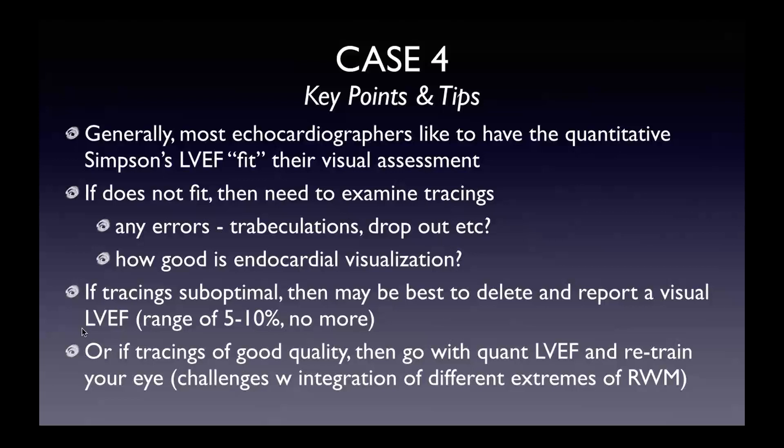Generally when we do Simpson's biplane, we would like to see that LV EF fit the visual assessment. If the number doesn't fit what you think when looking at all the images, you have to examine the tracings — are there any errors? Did you trace trabeculations? Is there dropout? Are you not seeing the endocardium as well as you thought? If the tracings are suboptimal and you didn't use contrast — or if you used contrast and tracings are still suboptimal — it might be best to delete the tracings and report a visual EF, ideally within a range of 5%, maximum up to 10%, so 40% to 45% or 45% to 50%.